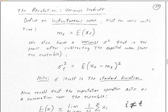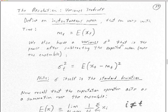For our stochastic processes we have this concept of the ensemble, and we can take a mean at some exact time T. We'll call that mean M at exact time T, which is of course the ensemble average — the expectation of X at T. There is also a variant sigma squared, which is the power after subtracting the expected mean over the ensemble.